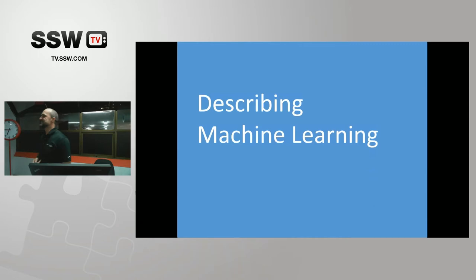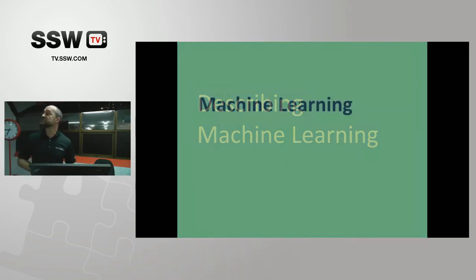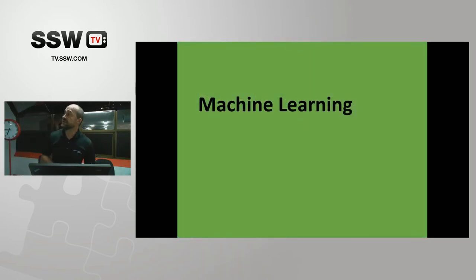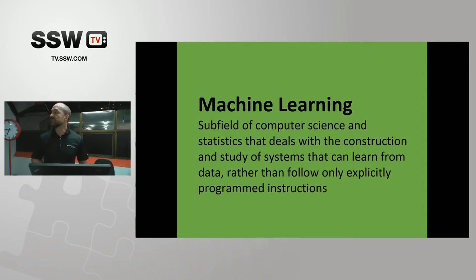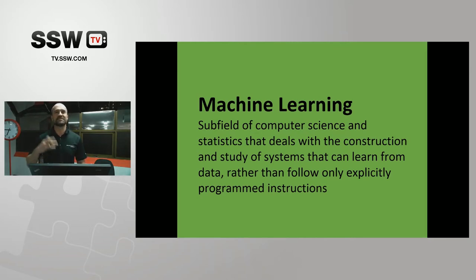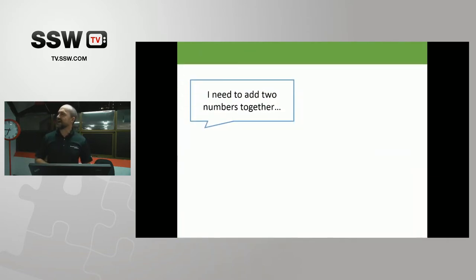We're here to talk about machine learning. By definition, machine learning is a subfield of computer science and statistics that deals with the construction and study of systems that learn from data, rather than what developers typically do — producing code and explicit instructions for a computer to follow. Let me explain this by example.